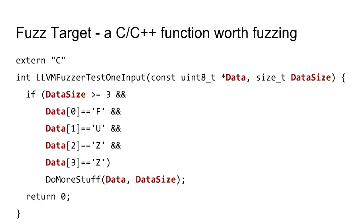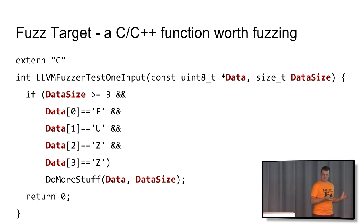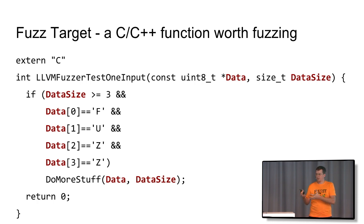My team is working on a very specific way of fuzzing. We fuzz C and C++ APIs or libraries. We do not fuzz large binaries or services. We fuzz small or medium-sized API entry points — you can think of it as unit test-like fuzzing. We define a thing called a fuzz target, which is a C function that consumes bytes. Inside that function, you can do whatever you like with those bytes — basically feed them in one way or another into your library.